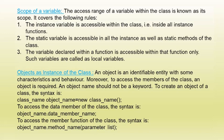The next topic is objects as instances of the class. An object is an identifiable entity with some characteristics and behavior. To access the members of the class, an object is required, and an object name should not be a keyword. The syntax to create an object is: class name, then object name, equals new, class name, and parentheses. To access data members the syntax is object name dot data member name. To access member functions the syntax is object name dot method name with the parameter list in brackets.